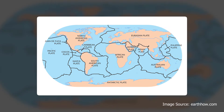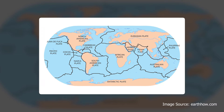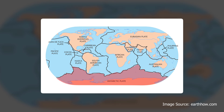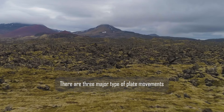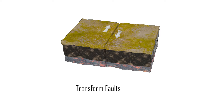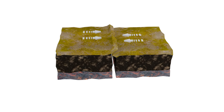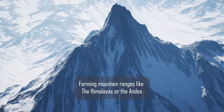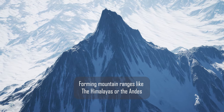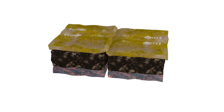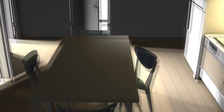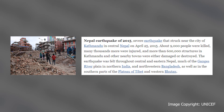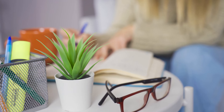पृथ्वी के surface पर 7 Major और 8 Minor Plates के साथ कई Microplates हैं। सबसे बड़ी Plates Antarctic, Eurasian और North American Plates हैं। Plate Movement के तीन Major प्रकार हैं: Convergent Plates, Divergent Plates और Transform Faults। जब Plates टकराती हैं तो एक plate दूसरी को push करती है जिससे बड़े-बड़े पहाड़ बनते हैं जैसे Himalayas और Andes mountain ranges। जब plates टकराती हैं तो ये collisions बड़े पैमाने पर भूकंप ला सकते हैं, जैसे 2015 में Nepal में आया था।